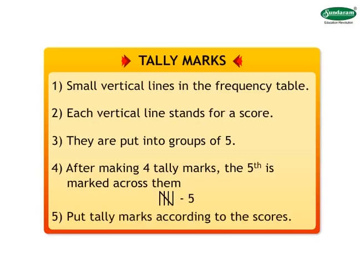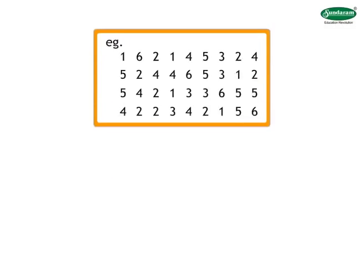For score 6, draw group of 5 lines then draw another vertical line next to this group. Similarly, for score 10, we draw 2 groups of 5 as tally mark. Now let us see how to make a frequency table.